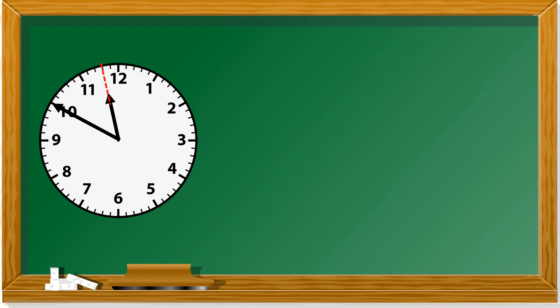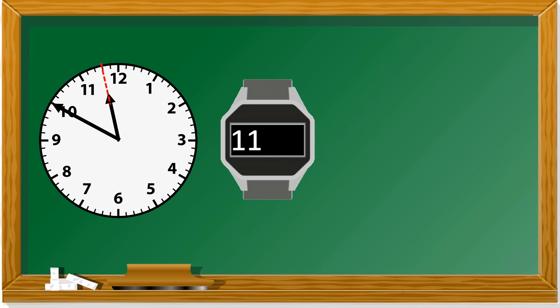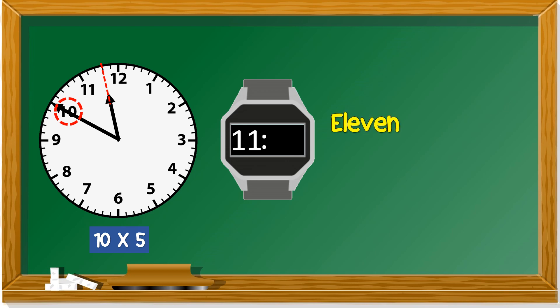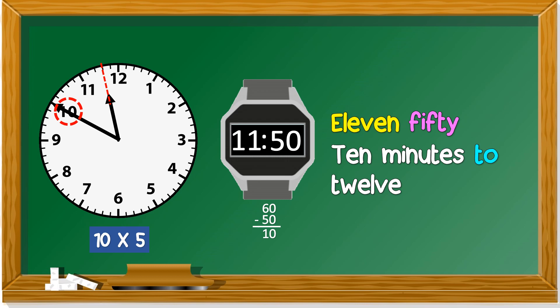This example: the hour hand is between 11 and 12 — not yet 12, so it's 11. The minute hand points to 10, so we get 10 times 5, which is 50. The time is 11:50. Or, remember the 'to' area — how many minutes to go to 12? We get 60 minus 50, which is 10. So it's '10 minutes to 12.'